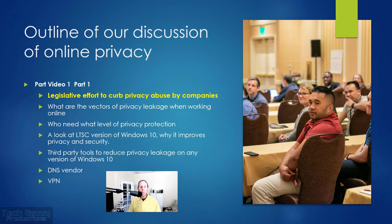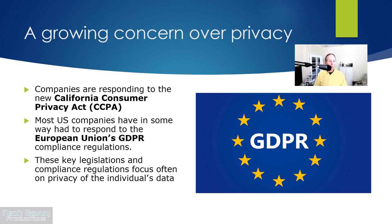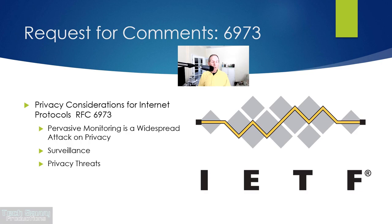Legislative efforts to curb privacy abuse by companies have been significant recently. The California Consumer Privacy Act is one example, and companies are beginning to respond. The European Union's GDPR has impacted almost every international company. These key regulations focus on privacy of the individual's data, showing governments are very concerned about this issue. There's also RFC 6973, produced by the IETF, focused entirely on privacy considerations for Internet protocols — covering massive monitoring, surveillance, and privacy threats. It's well worth a read.